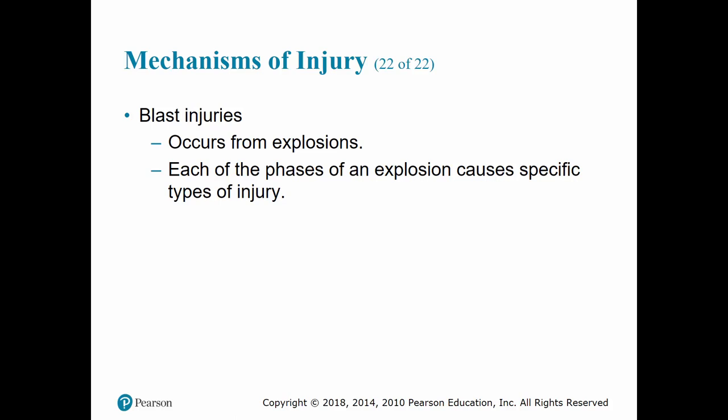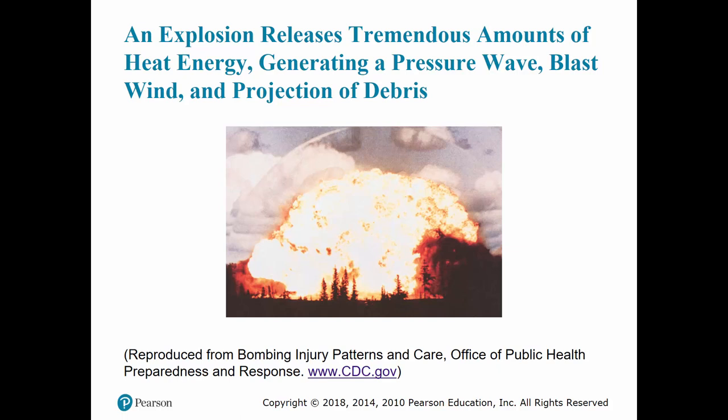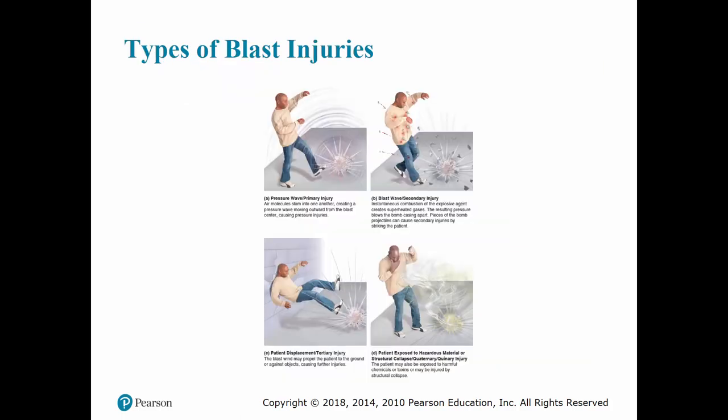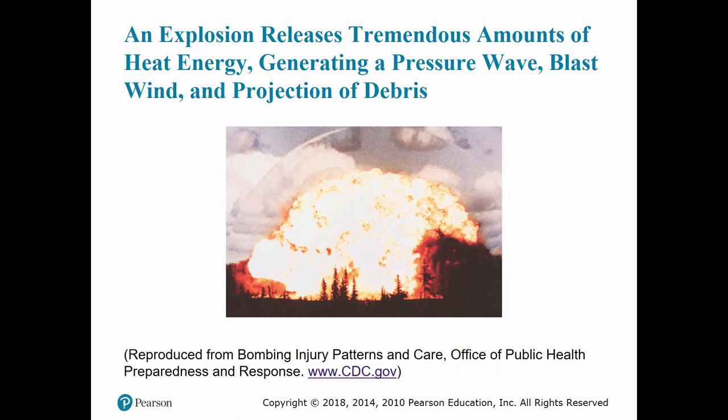Blast injuries occur because of explosions from various situations, such as those including natural gas, gasoline, fireworks, IEDs, and grain elevators. Regardless of the cause, every explosion has four phases: primary, secondary, tertiary, quaternary, and quinary phases. Primary phase injuries are due to the pressure wave of the blast. These injuries primarily affect the gas-containing organs such as the lungs, stomach, intestines, middle and inner ears, and sinuses. Severe damage and death can occur from this phase without any external sign of injury.